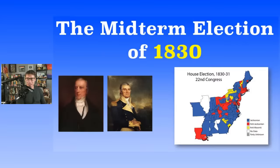In the House, there were 213 seats total; 107 were needed for a majority. The Democrats or Jacksonians still kept the majority — they now had 126. Anti-Jacksonians only had 66. The nullifier party picked up four seats, and the anti-Masonic party had five already and now picked up 12 more, ending up with 17.